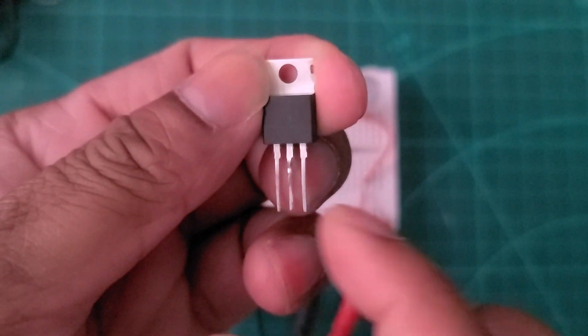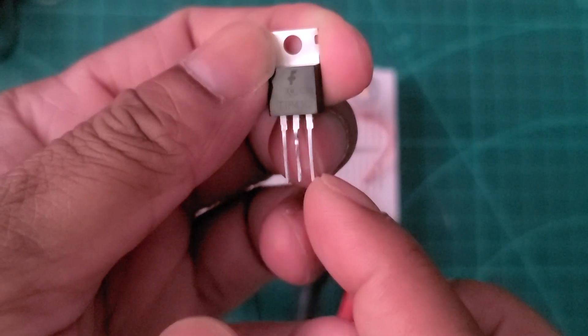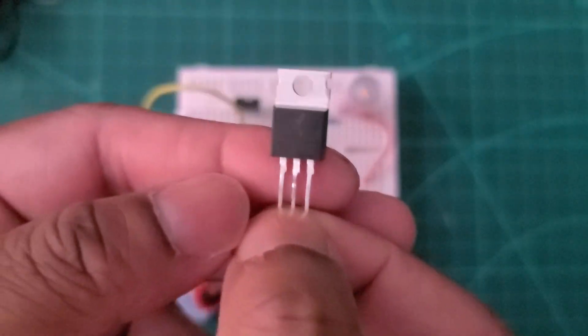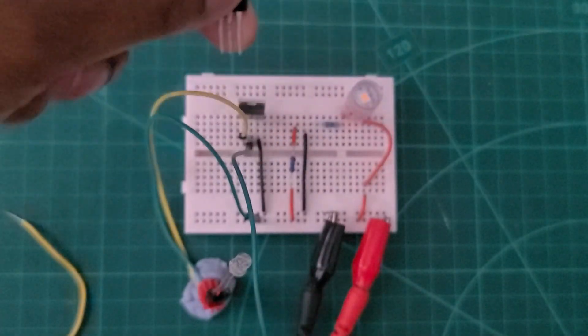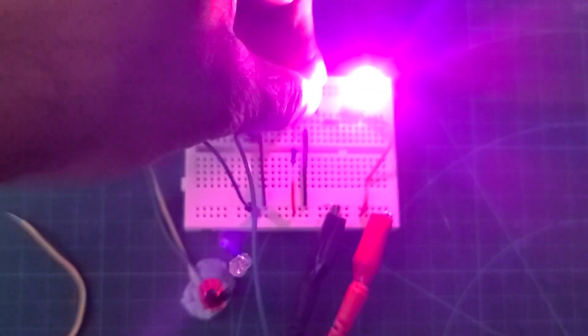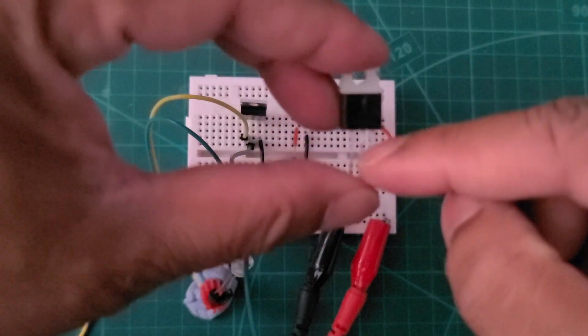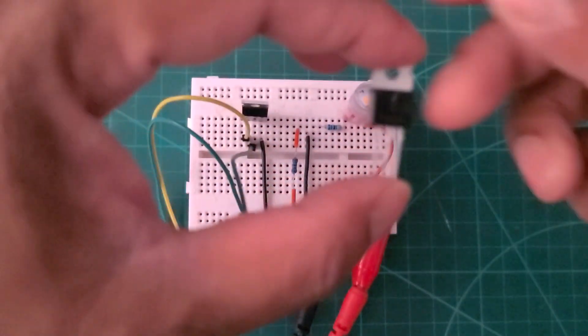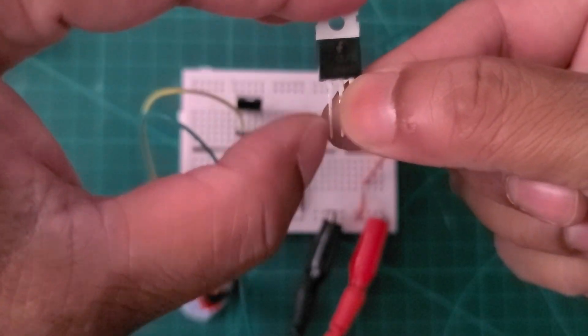It has got three pins: base, collector and emitter. In our circuit the ground of the LED will be connecting to the emitter and the connection will be completed through this middle pin which is called collector. What happens is this: